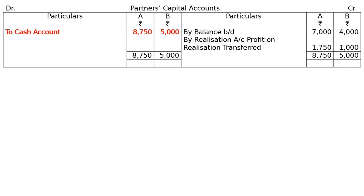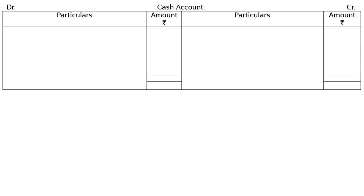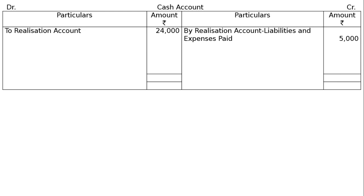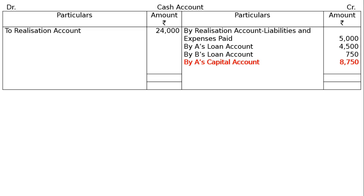Now prepare the Cash Account. On the debit side: to Realization Account — assets realized rupees 24,000. On the credit side: by Realization Account — liabilities and expenses paid rupees 5,000; by A's loan account rupees 4,500; by B's loan account rupees 750. Loans are to be paid directly. Then by A's capital account — final payment rupees 8,750; by B's capital account rupees 5,000. The total on both debit and credit sides is rupees 24,000, and both sides tally.